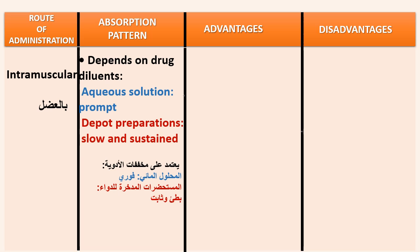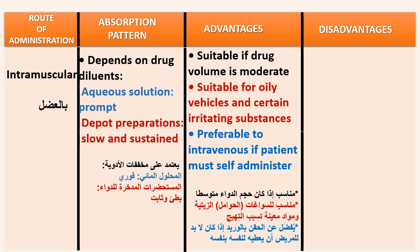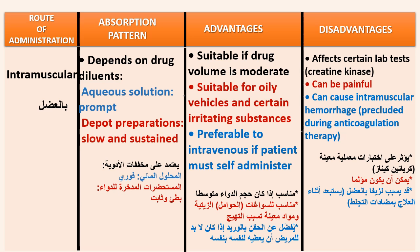Intramuscular route: suitable if drug volume is moderate, suitable for oily vehicles and certain irritating substances, and preferable to intravenous if the patient must self-administer. Its disadvantages are that it affects certain lab tests such as creatine kinase, can be painful, can cause intramuscular hemorrhage, and is precluded during anticoagulation therapy.